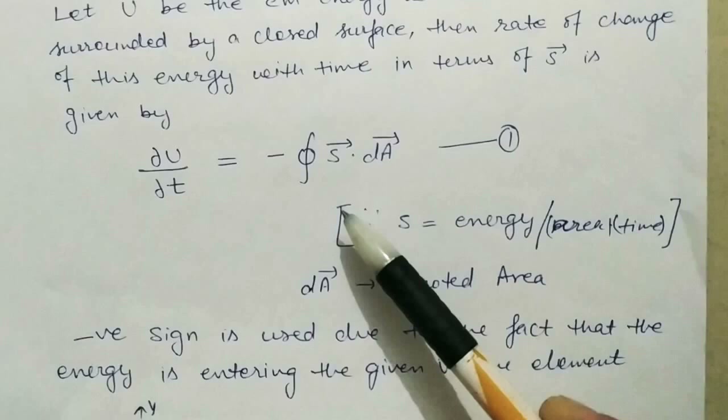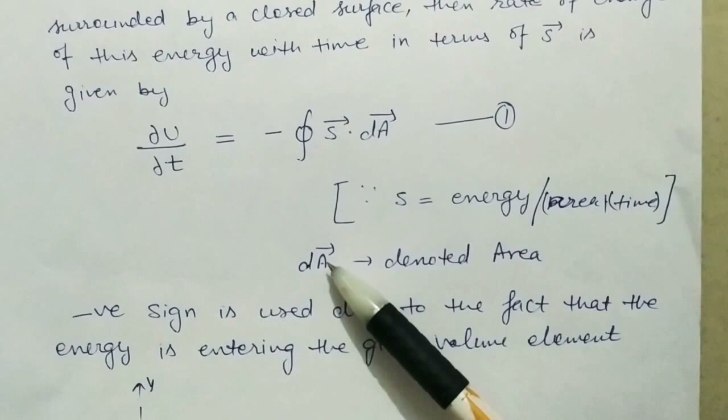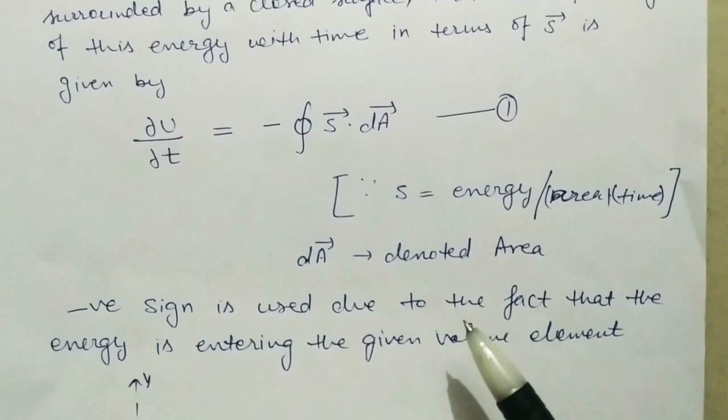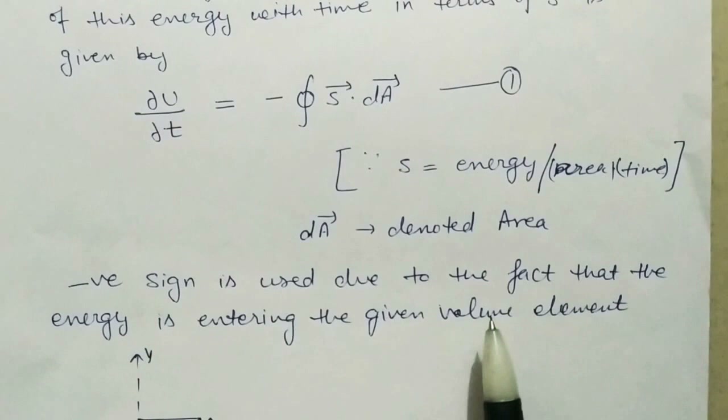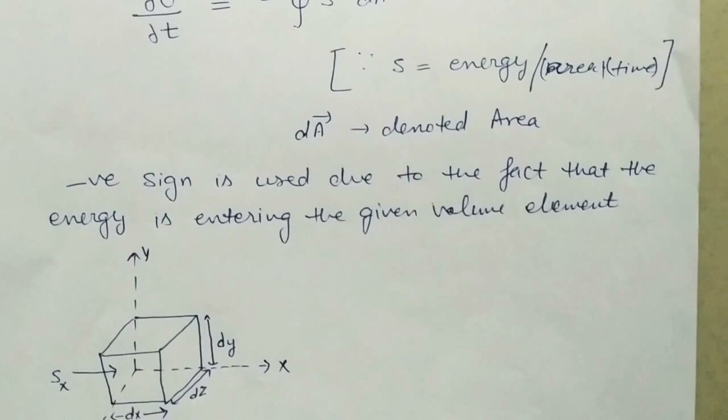Normally we represent area by dS, but here to avoid confusion we have represented area by A, so dA represents the small area element. The negative sign here indicates that the energy is entering the given volume — if energy is coming out, positive sign; if energy is entering, negative sign.